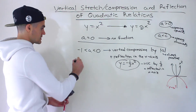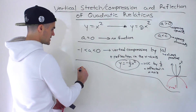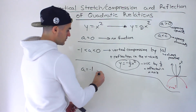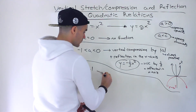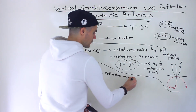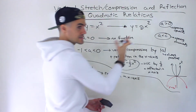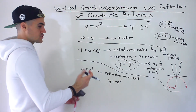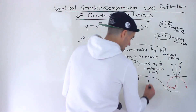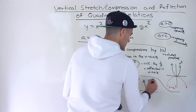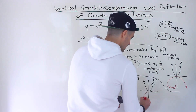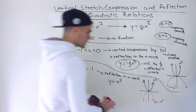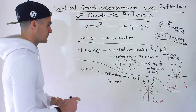The next case is if a equals negative one. This one is simple — notice there's no vertical stretch or compression, but there is a reflection in the x-axis. Remember, when a was one, there was no transformation — we just got the same base function x squared. But if it's negative one, now we'll have negative x squared. Even though there's no vertical stretch or compression, there's still a reflection in the x-axis, and that graph will have the same shape as x squared but pointing downward.